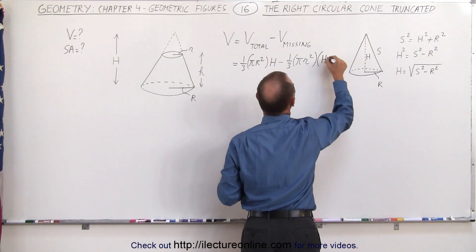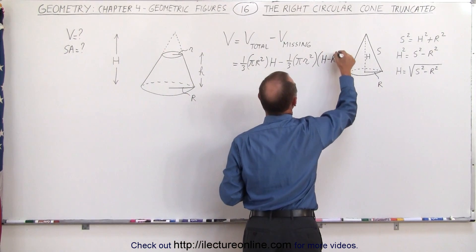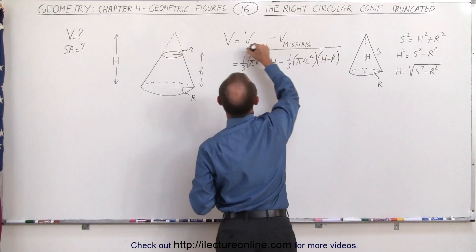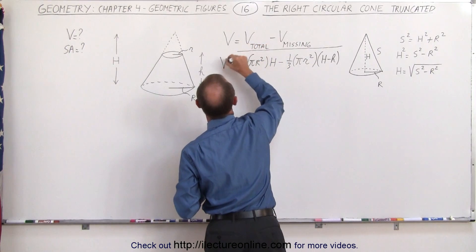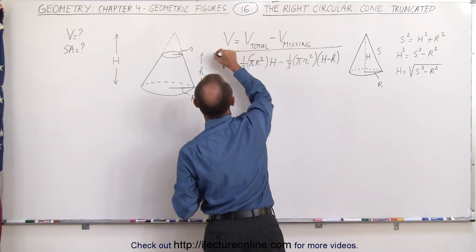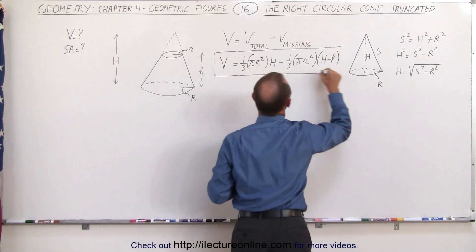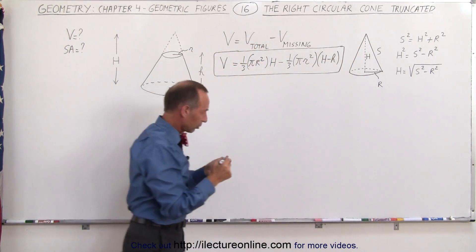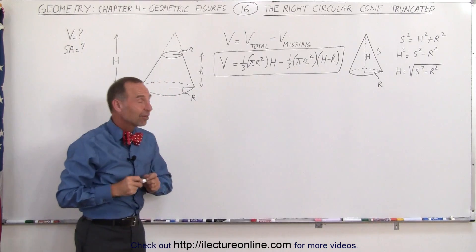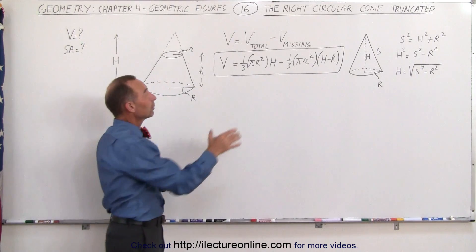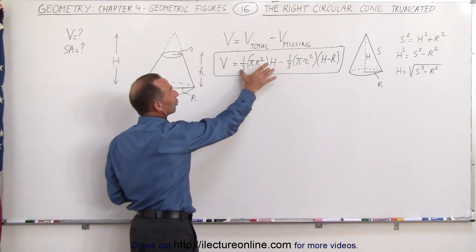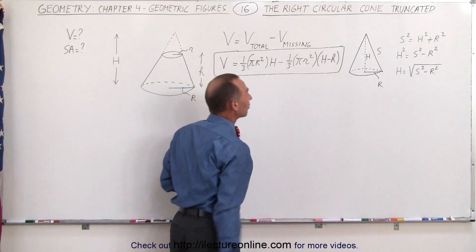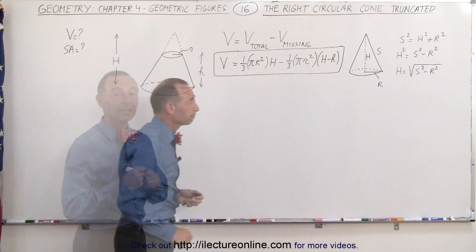So that is big H minus little h, and that gives us V, the volume of a truncated right-circular cone. It's simply the volume of the total cone minus the volume of the piece that is missing.